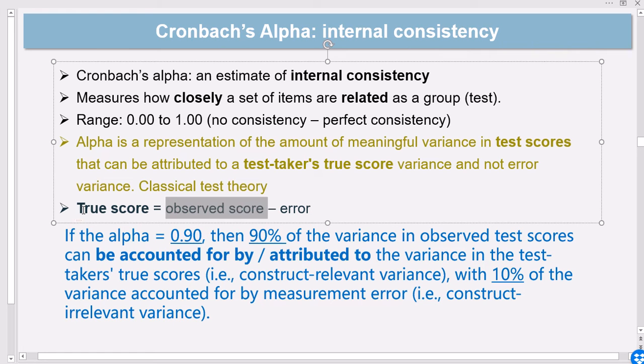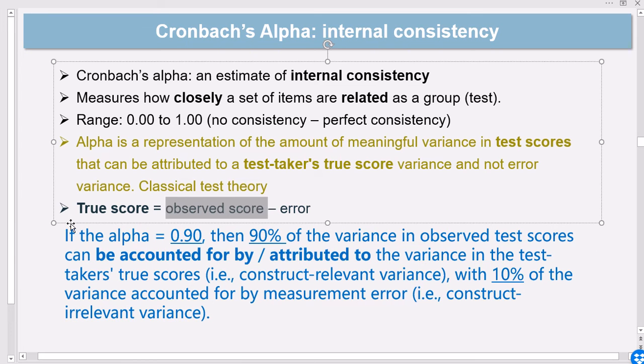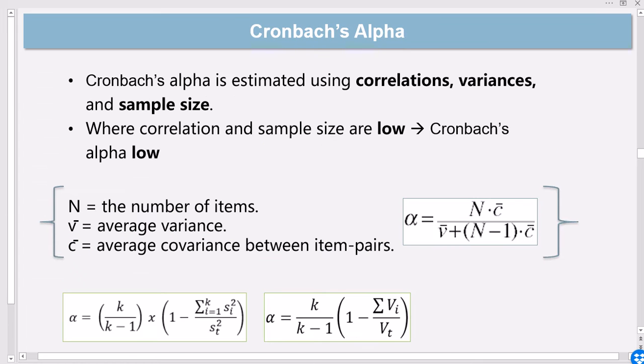If your Cronbach's alpha is 0.90, you have 90% confidence that your observed scores represent true scores. But if it is 0.3, based on classical test theory, you only have 30% confidence that your observed scores represent the true scores, and you have 70% lack of confidence. That might not be a very high index.